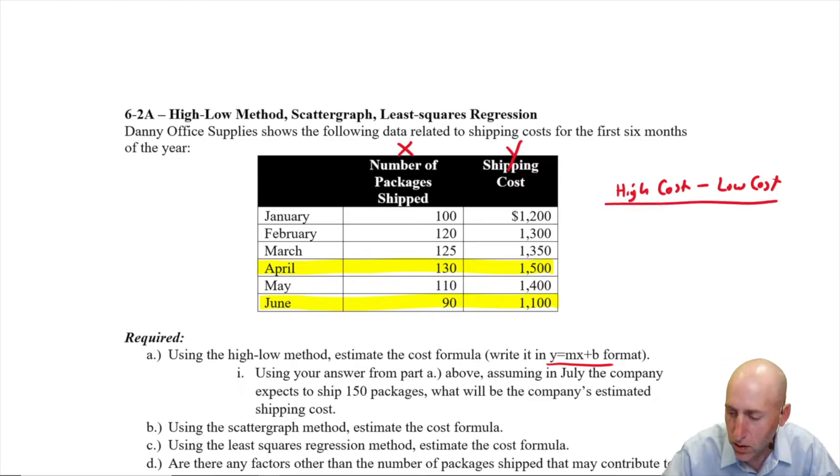So high cost minus low cost divided by high activity minus low activity. Okay, so again, high cost. I really want to be careful there. When I say high cost, I mean the month with the highest activity level, the cost in that month. So in this case, April happened to be $1,500, and that was the highest cost month. But if it was January, we would still use April, because the number of packages shipped was higher. So we choose the month with the highest activity level. Okay, I think I've belabored that point long enough.